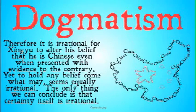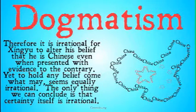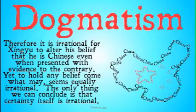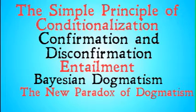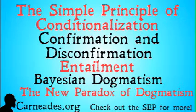Therefore, it is irrational for Xing Yu to alter his belief that he is Chinese, even when presented with evidence to the contrary. Yet to hold any belief come what may seems equally irrational, and is going to be a problem for our original deductive rationality. The only conclusion we can draw if we want to hold on to Bayesian epistemology is that certainty itself is irrational. That was an example of the problems with Bayesian dogmatism. In the next video we'll look at an official premise-conclusion argument for the new paradox of dogmatism. Stay skeptical, everybody.